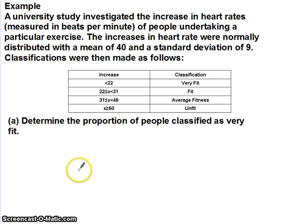Here's our example. A university study investigated the increase in heart rate, measured in beats per minute, of people undertaking a particular exercise. The increases in heart rate were normally distributed with a mean of 40 and a standard deviation of 9. Classifications were then made as follows.